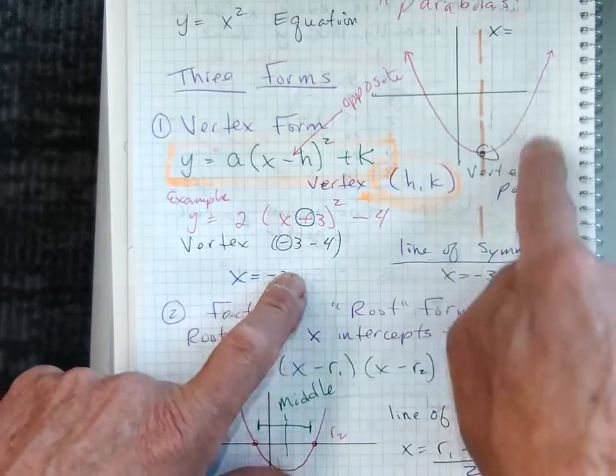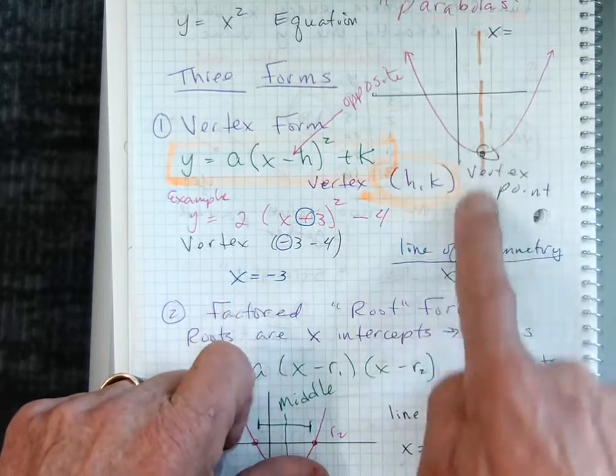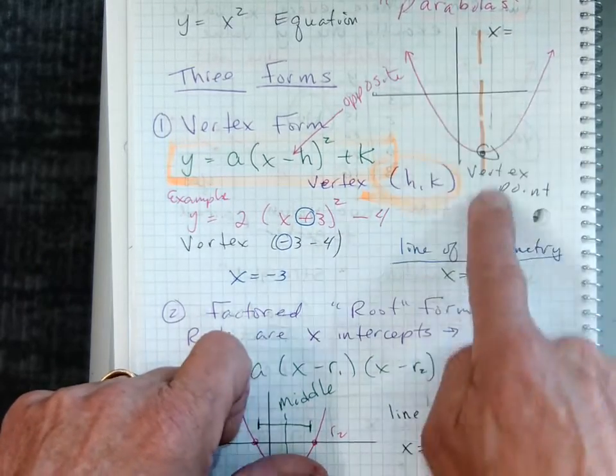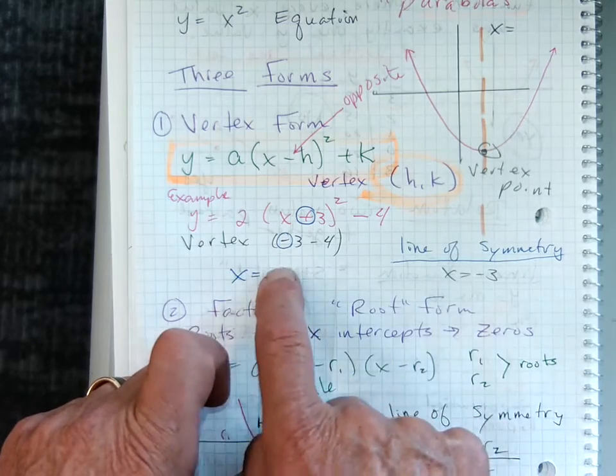So if I could graph the vertex, it's at that bottom point. We know the line of symmetry, the axis of symmetry always goes through it. So we'd have an x equals negative three would have to be the axis of symmetry.